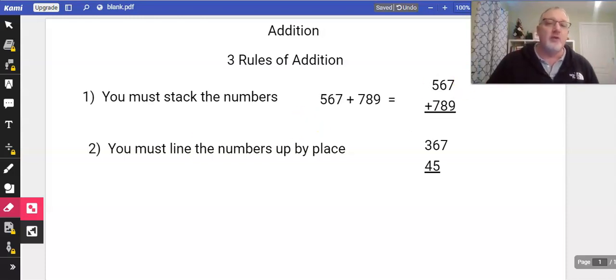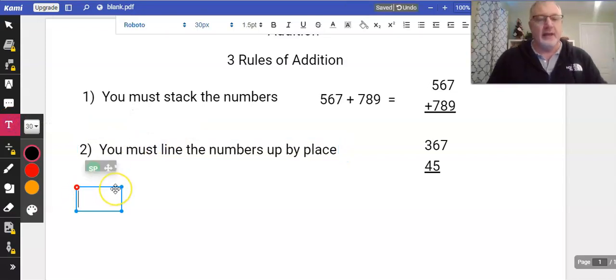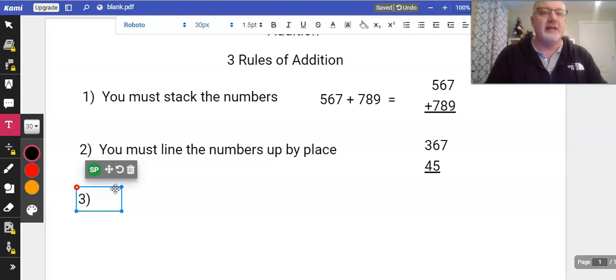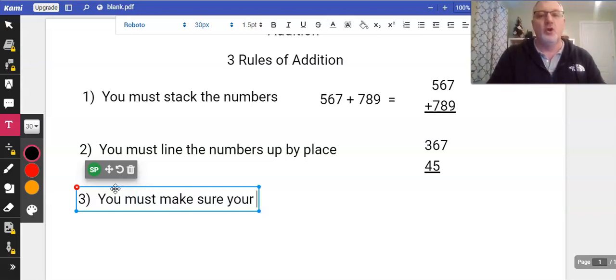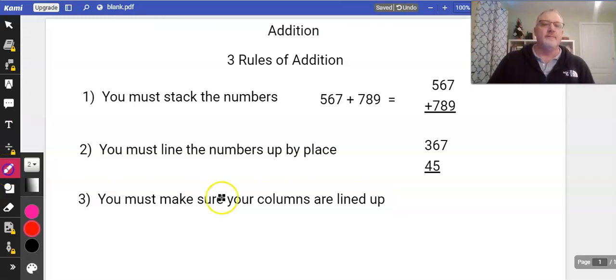And then rule number three, as we continue on here, is again this is another one of those things that not all kids do but you do have quite a few of them: you must make sure your columns are lined up. Again, it's a little harder to show with the computer here, but I'll just freehand it here and show you what I'm talking about.